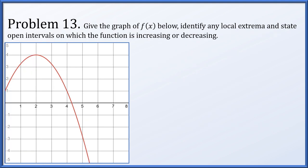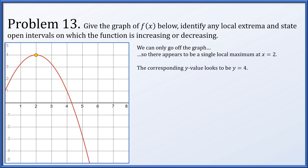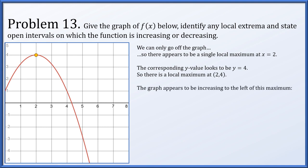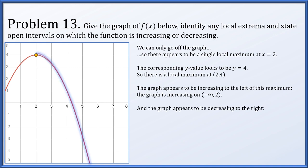For problem 13, from the graph of f(x), there appears to be a single local maximum at x = 2 with y = 4, so a local maximum at (2, 4). The graph is increasing on (-∞, 2) and decreasing on (2, ∞).